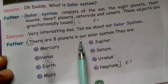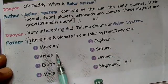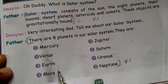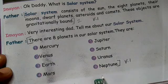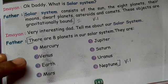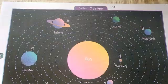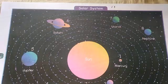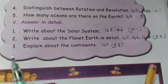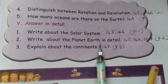There are 8 planets in our solar system. They are Mercury, Venus, Earth, Mars, Jupiter, Saturn, Uranus, and Neptune. Write all 8 planet names. That covers the solar system detailed answer.